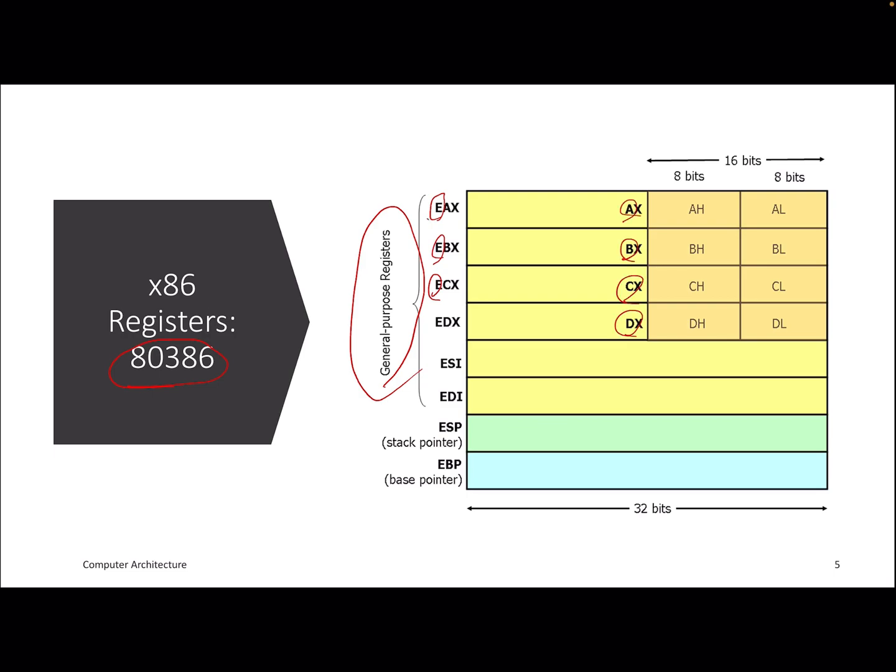Otherwise it becomes EAX, EBX, ECX, EDX like that for 32-bit. But nowadays we have 64-bit x86-64 ISA, so you can also go and look at the registers. I think in the OS course you will be playing with these registers more frequently compared to this course.